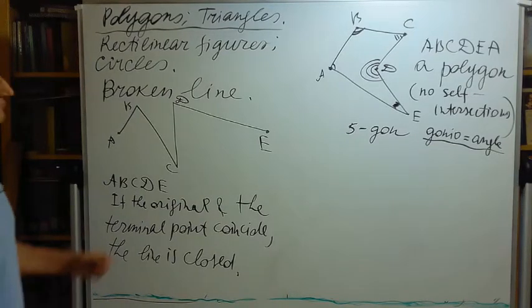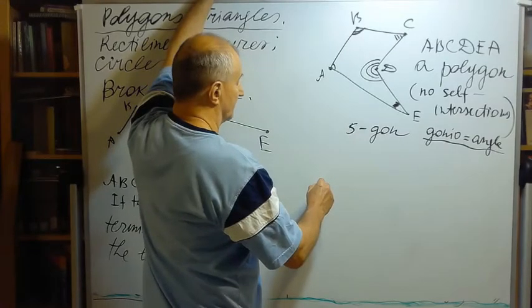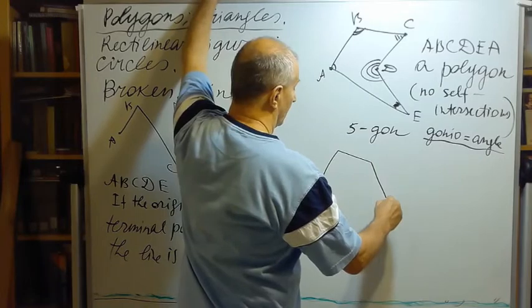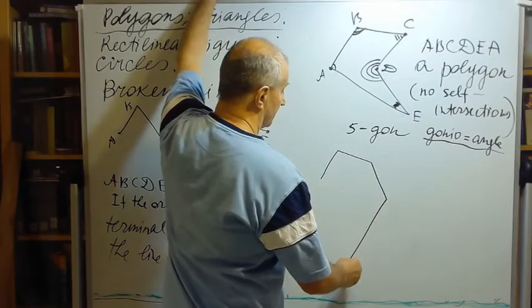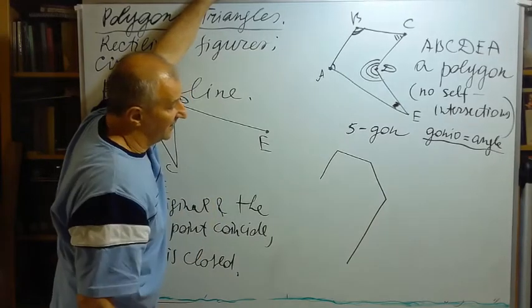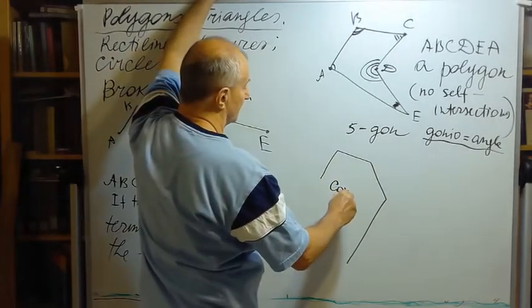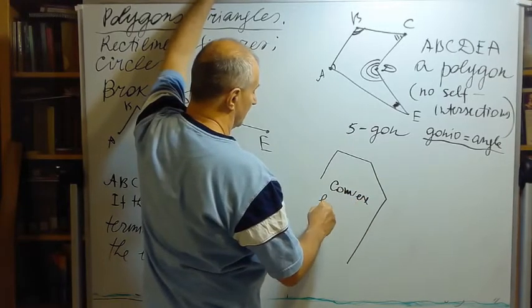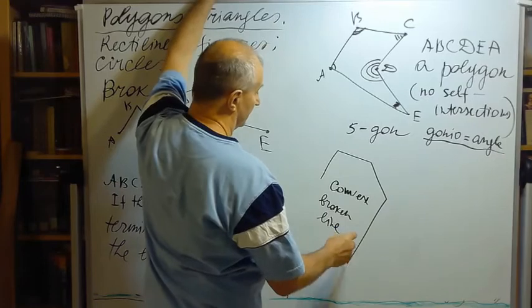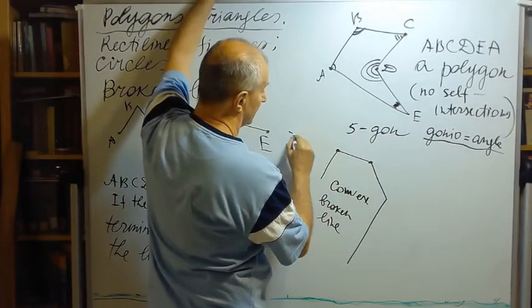What else? A broken line can be convex if by extending one of the sides, the whole line will lie in one half-plane. So this is a convex broken line. You can experiment. For instance, I will extend this segment into a straight line.